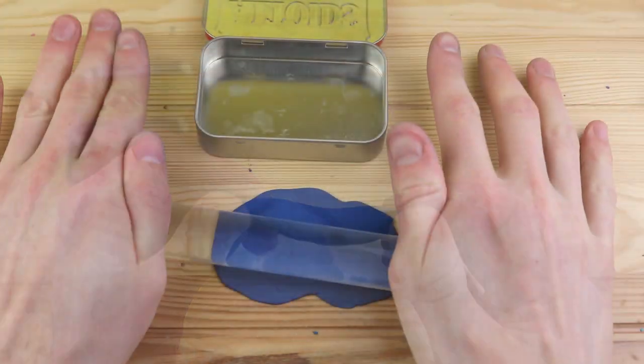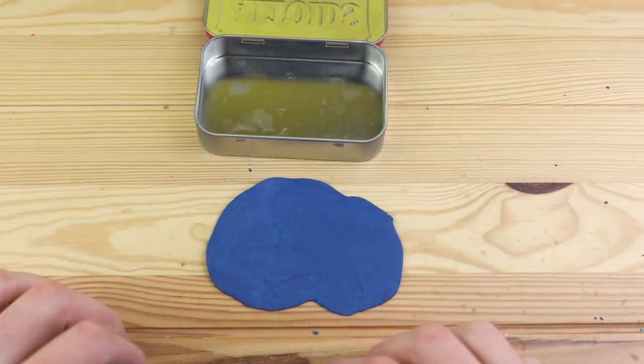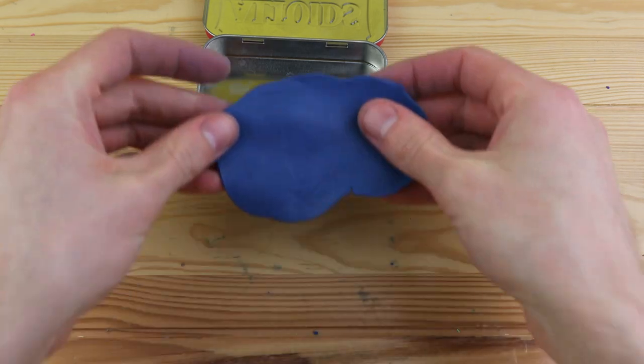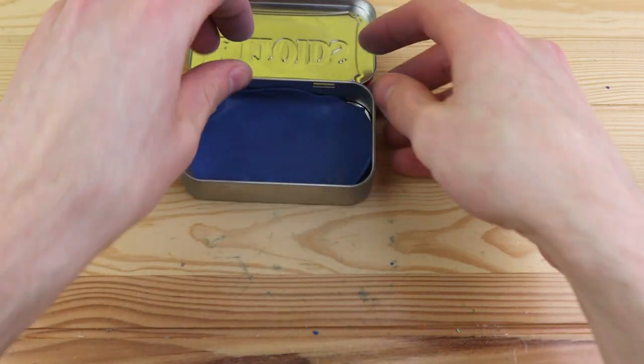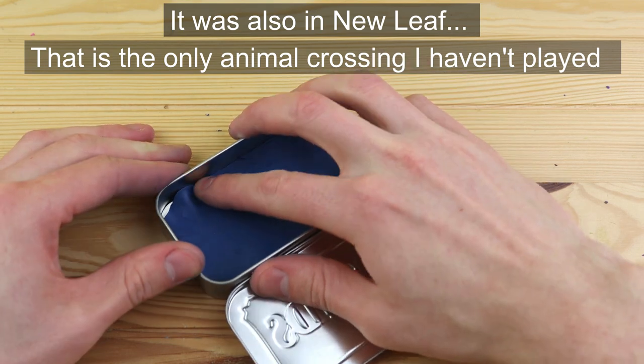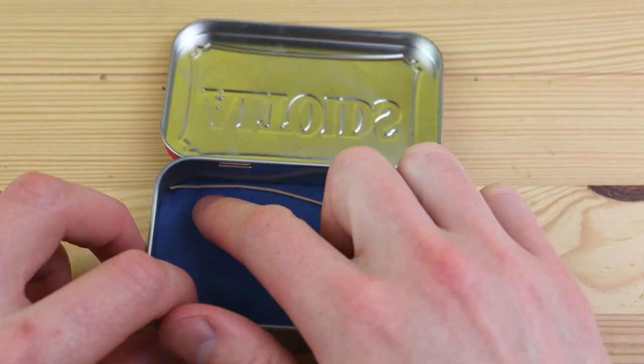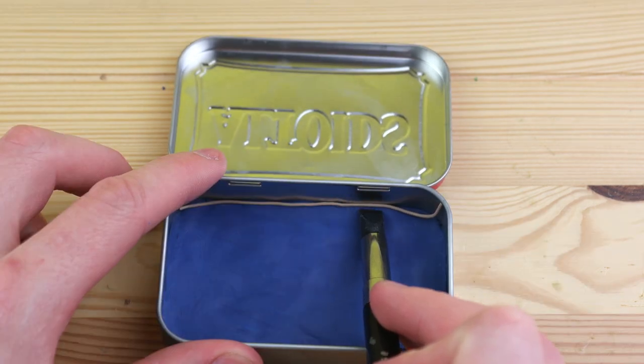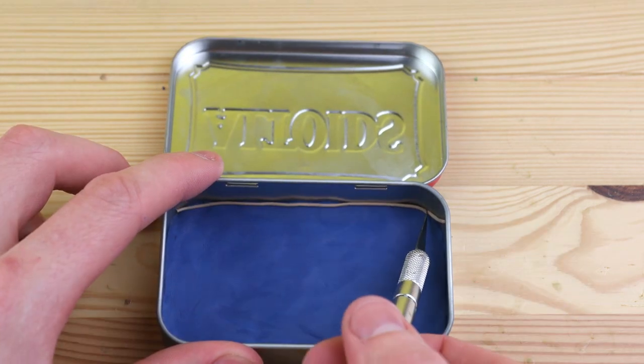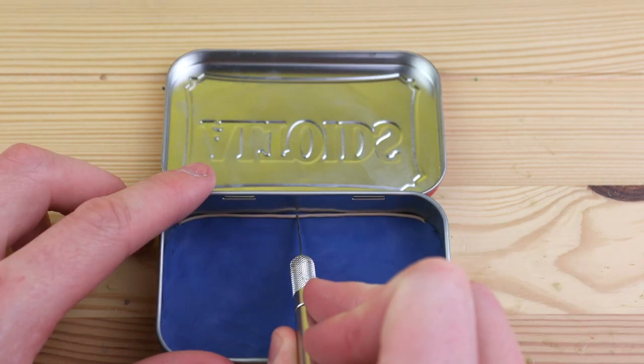Now we have this mixture of all these different blues and this will be for the water layer. In Animal Crossing New Horizons they have this feature that hasn't been in any other Animal Crossing game called deep sea diving. It's an extension of fishing, so instead of throwing your pole in, you actually jump into the water yourself and dive down to catch these different sea creatures.